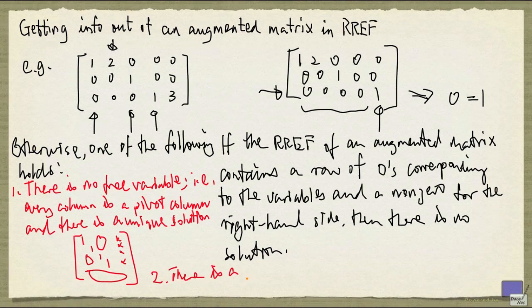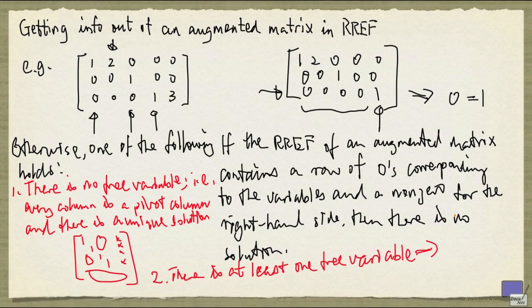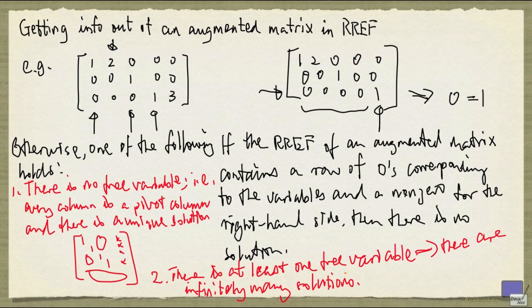The other case is there is at least one free variable, and in this case, there are infinitely many solutions. And the way to obtain all the solutions is, for each free variable, set it to a separate parameter, and then write the pivot variables in terms of all these parameters. So for example here, we had one free variable, and so we had only one parameter. And we saw how the solution set is given in terms of that one parameter.